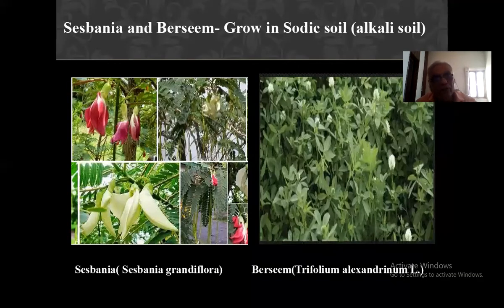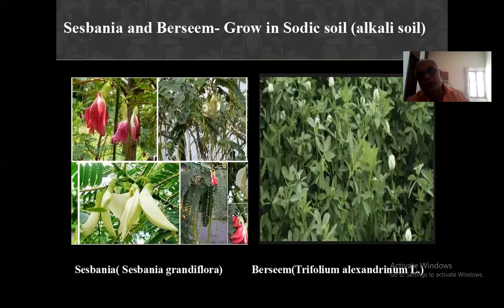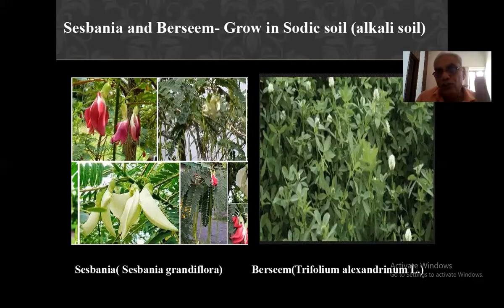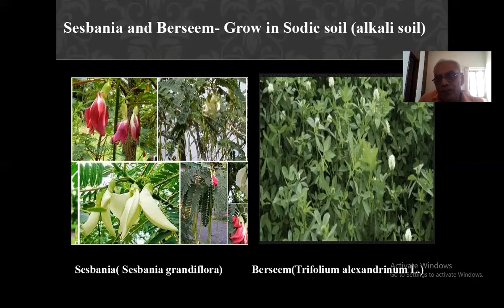Sesbania and Bersim grow in sodic alkali soil. You can also grow leucaena crop in sodic soil. Bersim is a forage crop and it feeds animals. Sesbania crop also reclaims the soil. You can grow these successfully because both are alkali-resistant crops. Leucaena crop is also grown — for example, in the Kutch area where the soil is saline alkali — and the leucaena crop is grown successfully there.